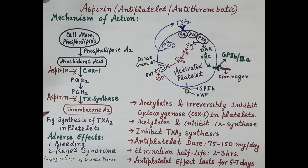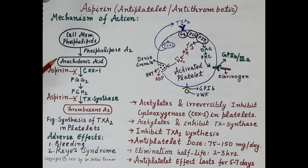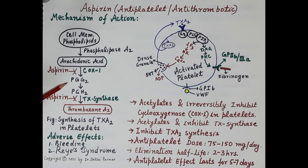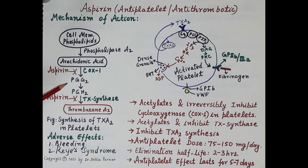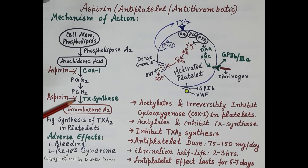This schematic diagram shows the synthesis of thromboxane A2. When a platelet is activated, phospholipids in the platelet cell membrane break down to produce arachidonic acid. Arachidonic acid is further converted to prostaglandin G2 by the enzyme COX-1 (cyclooxygenase-1) present in platelets. Prostaglandin G2 is then metabolized to PGH2, and PGH2 finally produces thromboxane A2 in the presence of thromboxane synthase.